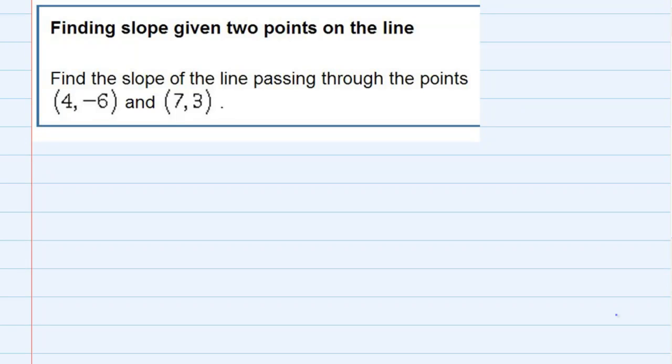Finding the slope given two points on the line. We're asked to find the slope passing through these two points, and our formula for slope is m, or slope, is y₂ minus y₁ divided by x₂ minus x₁.